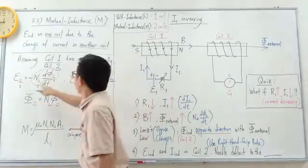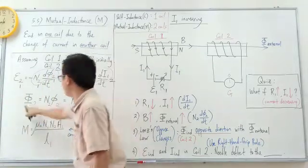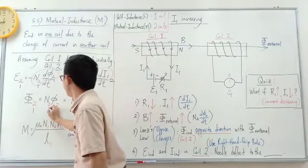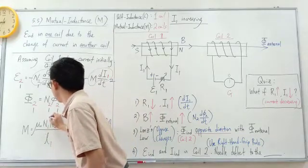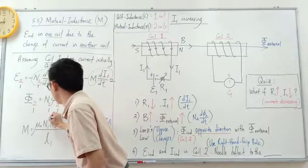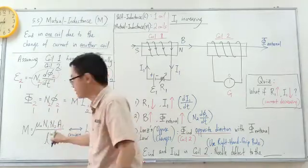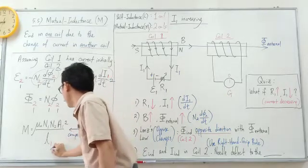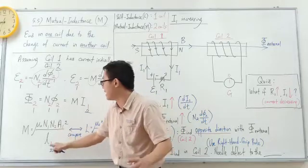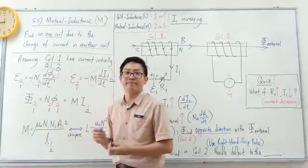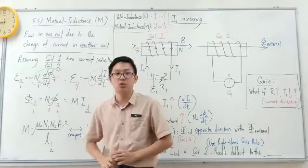We can also relabel the coils as coil P and coil Q. The key point is that the number of turns N1 and N2 remain in the formula, but the area and length must be changed to A2 and L2 when coil two has the current. We always take the area and length from the coil that has the current. Because coil two has current, we take A2 and length 2.